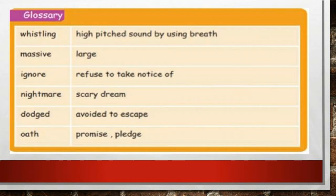Let us see some glossary in this lesson. First one: Whistling. Whistling means a high-pitched sound made by using breath. Second one: Masu — large. Ignore means refuse to take notice of. Nightmare means a scary dream. Dog means avoided to escape. Oath means a promise or pledge.